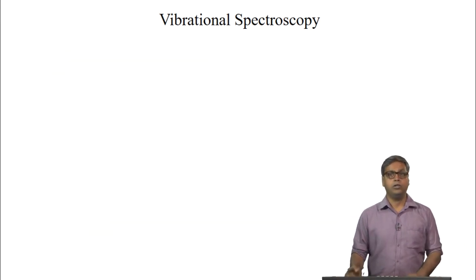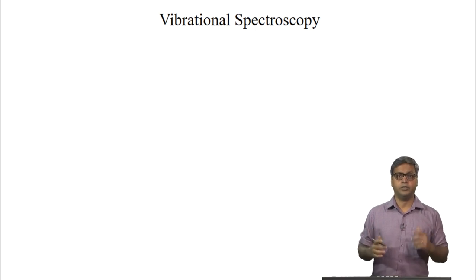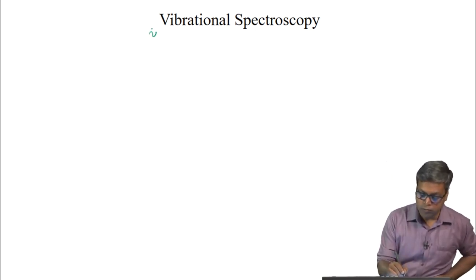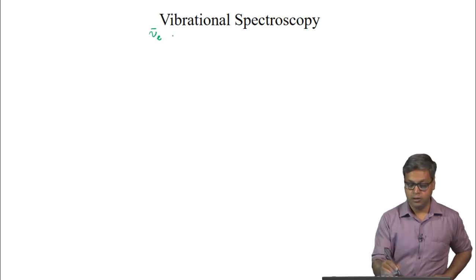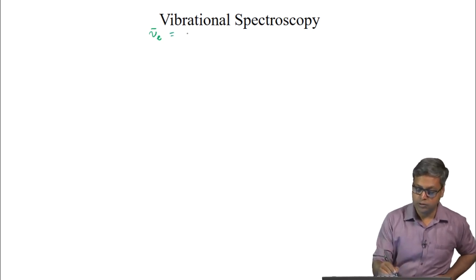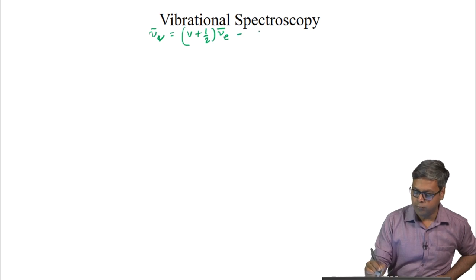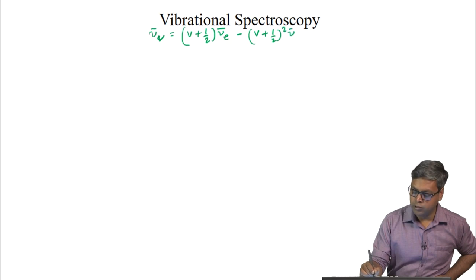Using the anharmonic energy expression, nu-bar_V equals (V + 1/2)nu-bar_E minus (V + 1/2)² nu-bar_E chi_E, we can find the energy difference corresponding to the first overtone.